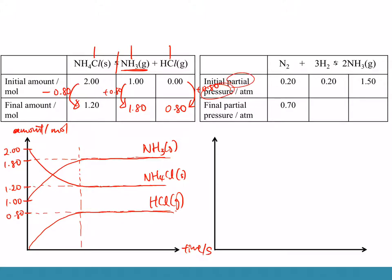Now let's look at partial pressure. Partial pressure is the pressure that a particular gas exerts, and the total pressure is a combination of the partial pressures of each individual gas. In this example: the initial partial pressure for N₂ is 0.2, for H₂ is 0.2, and for NH₃ it is 1.5. From initial to equilibrium, N₂ increases by 0.5. H₂ is in a 1:3 ratio with N₂, so it increases by 1.5, ending at 1.70. On the right-hand side, NH₃ decreases by twice 0.5, so decreases by 1, ending at 0.5.